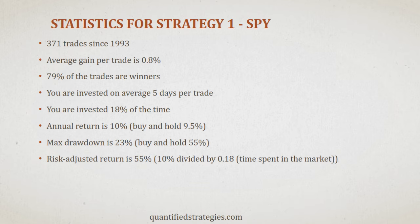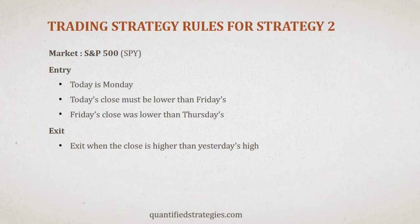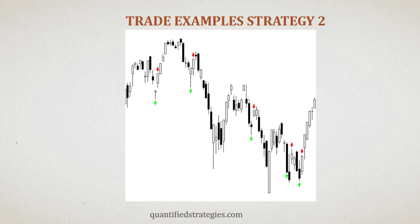Let's go to our second strategy and its trading rules. We buy at the close on Monday if the close is lower for the second day in a row. We exit when the close is higher than yesterday's high. The name of the strategy is perhaps better known as Turnaround Tuesday, because the market often rallies on Tuesdays after a weak Monday. The green arrows show Mondays where the close is down for the second time in a row, and red arrows are when we sell on strength. All five trades shown here are profitable, but trading also involves losing trades.